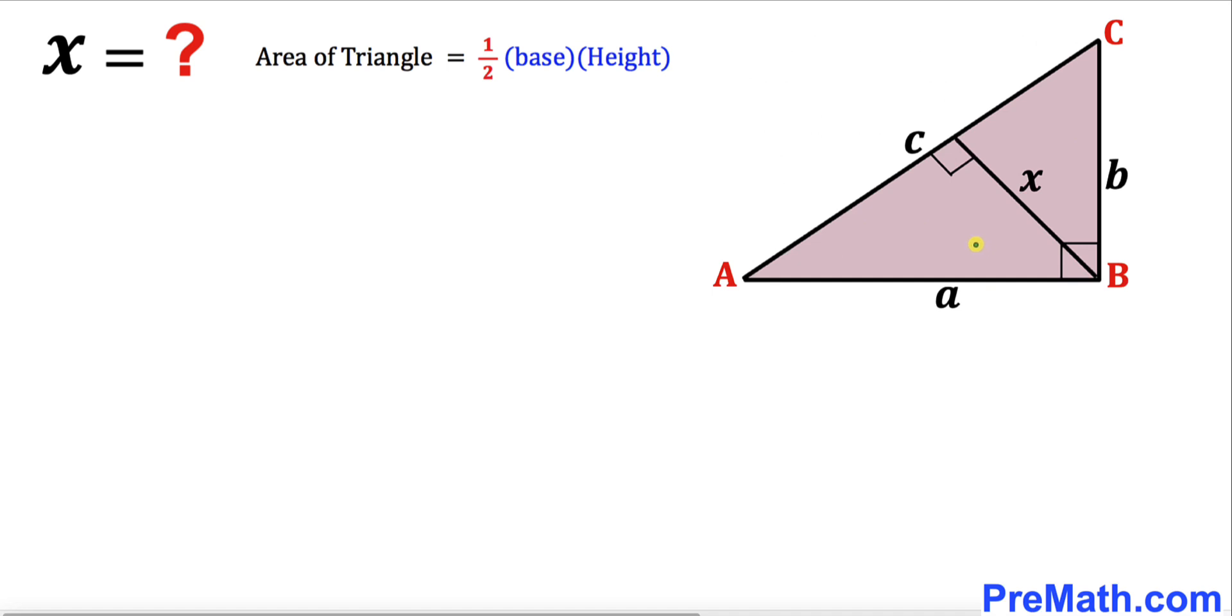We are going to consider two scenarios. Here's our first scenario: when our base is A and our height is B, the area of this triangle ABC is going to become...